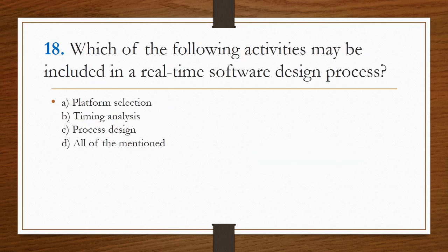Which of the following activities may be included in a real-time software design process? In a real-time software design process we use platform selection, timing analysis, and process design. All of the above are used, so option D is the right answer.